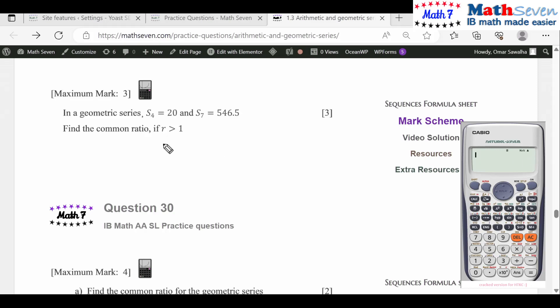So S4 = 20 equals U1(1 - r^4)/(1 - r), and the other one which is S7 = 546.5.